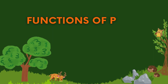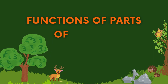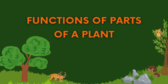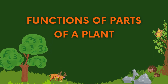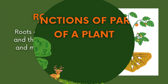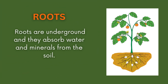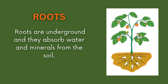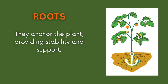Now we discuss the function of each part of a plant. Roots are underground and they absorb water and minerals from the soil. They anchor the plant, providing stability and support.